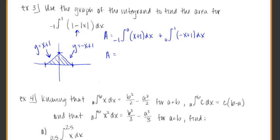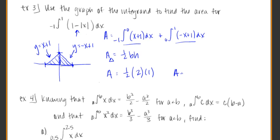We don't yet know how to evaluate those definite integrals — that's coming in the next section. But looking at the graph, we notice we basically have a triangle. The area of a triangle is one-half base times height. The base spans from negative 1 to 1, so it's 2, and the height is 1. So the total area is one-half times 2 times 1, which equals 1 square unit.